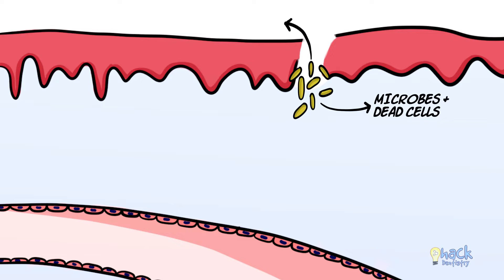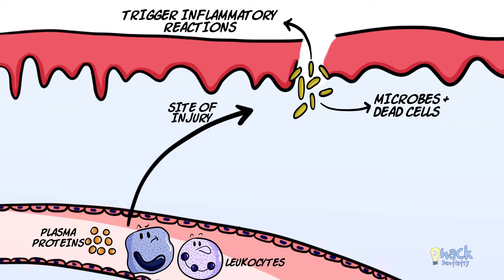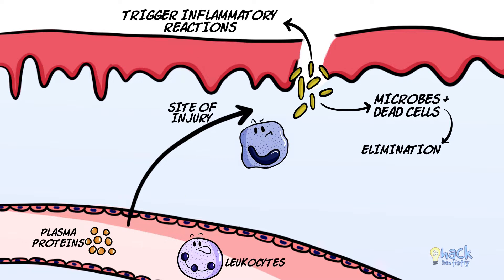Microbes and dead cells could trigger inflammatory mediators to cause inflammation, which is basically the body's response of delivering leukocytes and plasma proteins to the site of infection or injury so that the offending agents could be removed or eliminated. When the body is inflamed due to microbes or other external agents, leukocytes migrate from the blood vessels to the site of infection through a process called chemotaxis.